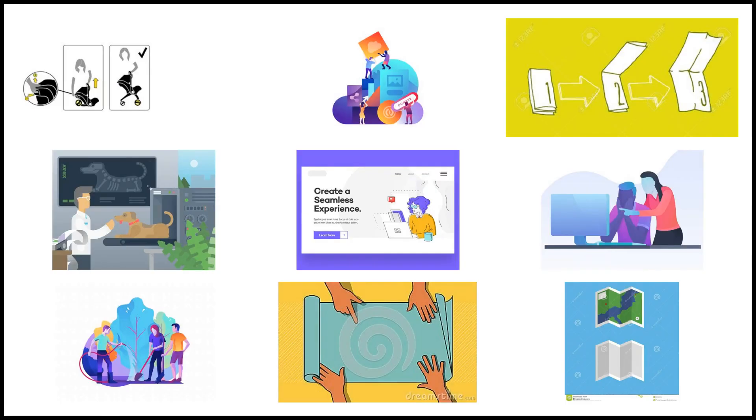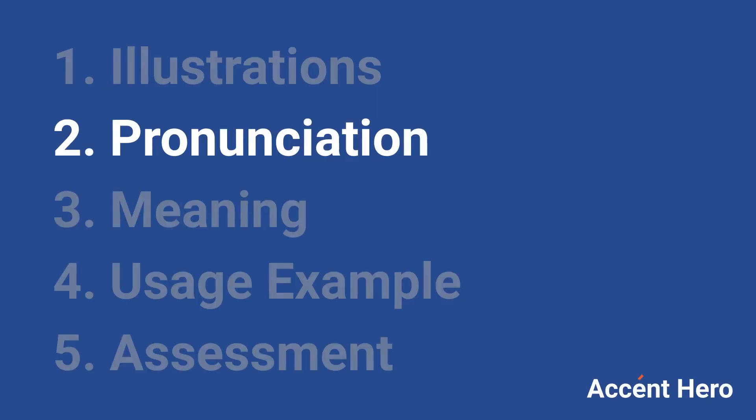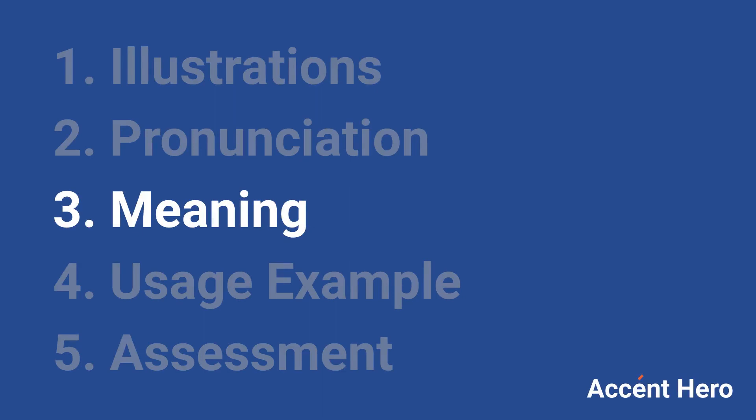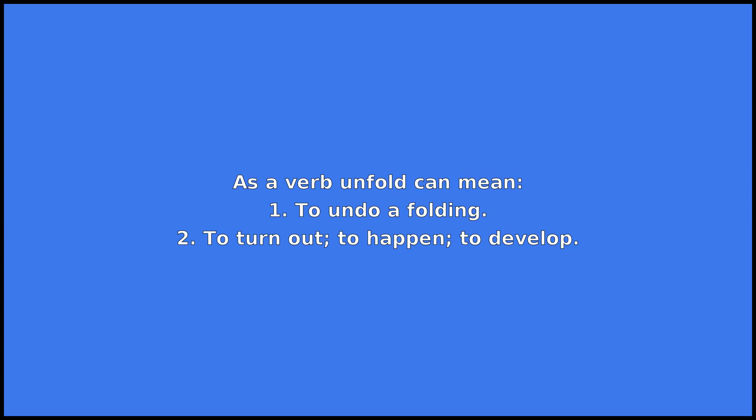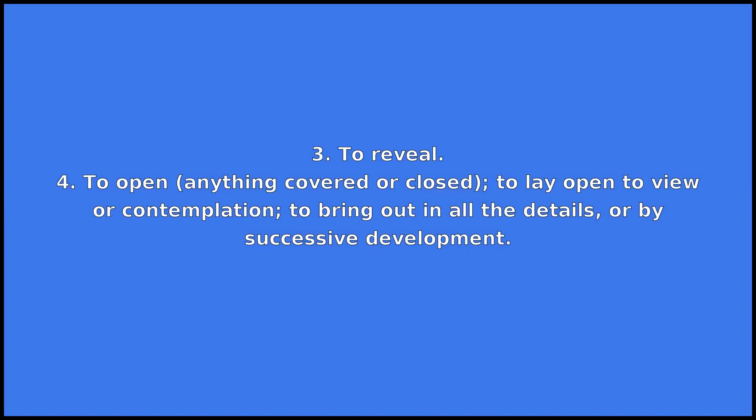Unfold. Unfold can be a verb or a noun. As a verb, unfold can mean: one, to undo a folding; two, to turn out, to happen, to develop; three, to reveal; four, to open anything covered or closed, to lay open to view or contemplation, to bring out in all the details or by successive development.